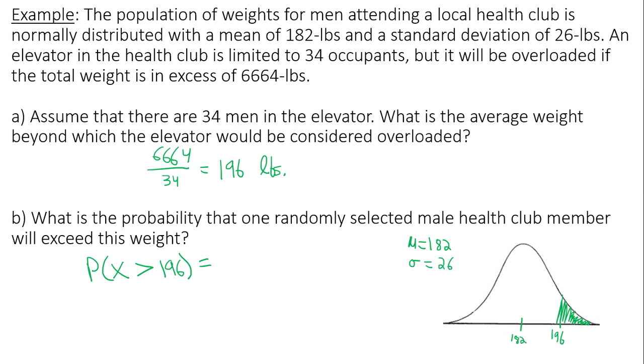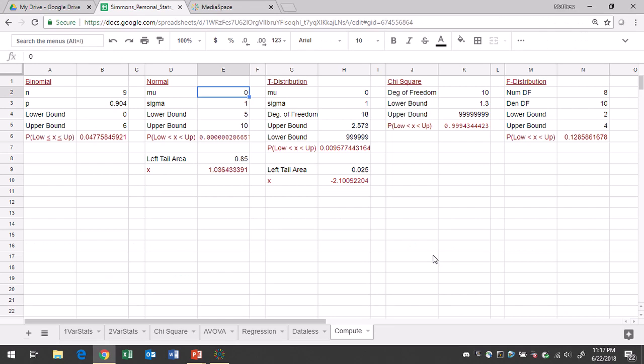This is what we'll use in Google Sheets. So the mean is 182, standard deviation is 26. Lower bound is 196, upper bound is infinity, or six nines. You can do more nines if you want, but it really doesn't matter. And I get about 0.2951.